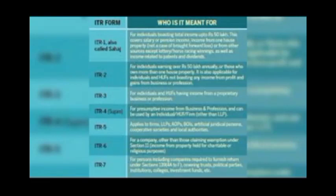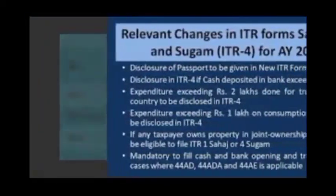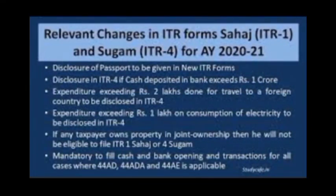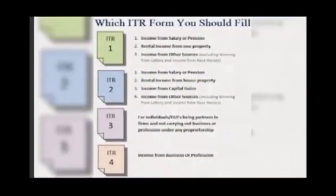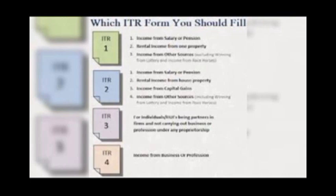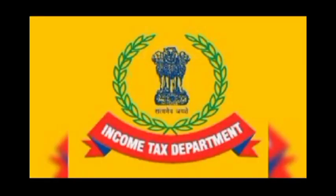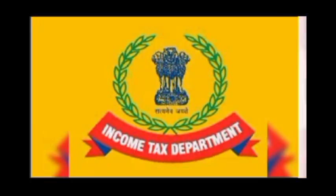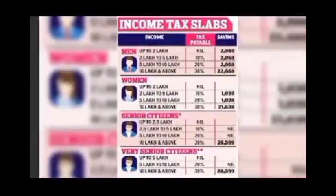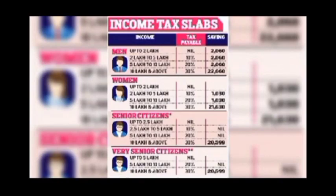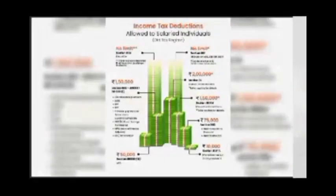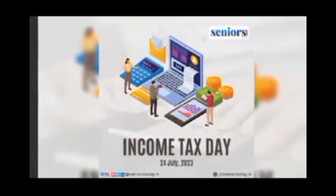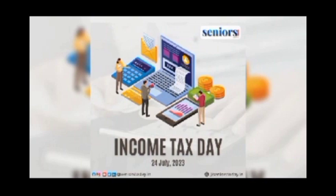Now I am going to explain about additional forms. Form 13 is used to reduce tax deducted at source for a payment. Form 15G and 15H are submitted to the bank to recommend not deducting TDS on interest income. Form 16 shows TDS details on salary. Form 19 is for persons to withdraw EPF at the time of retirement. Form 26AS tells you the amount deducted as TDS or TCS from various incomes of the taxpayer.